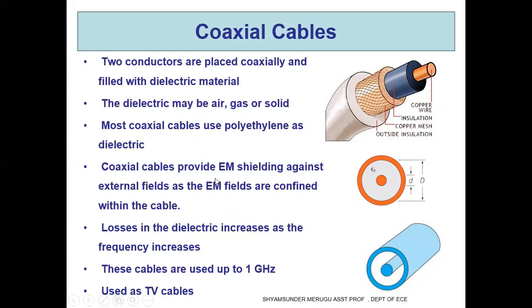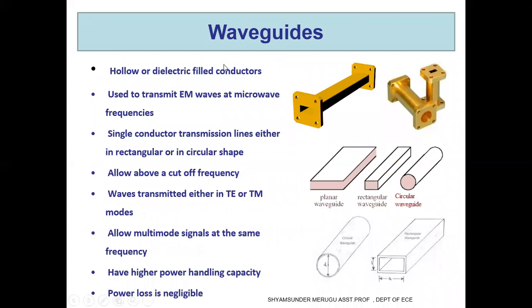Coaxial cables provide electromagnetic shielding against external fields, as the electromagnetic fields are confined within the cable. The losses in the dielectric increase as the frequency increases. These cables are used up to one gigahertz, and we can see these cables as TV cables for reception of TV signals.